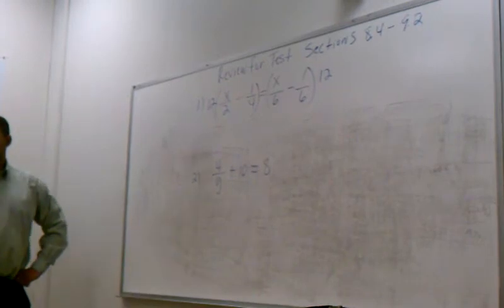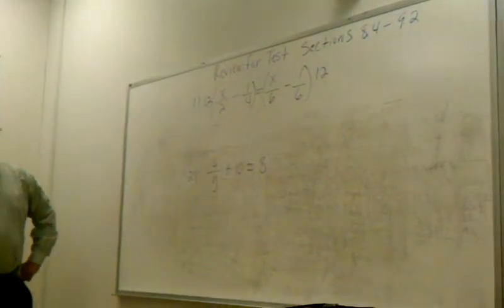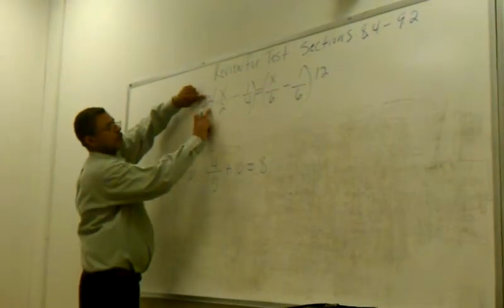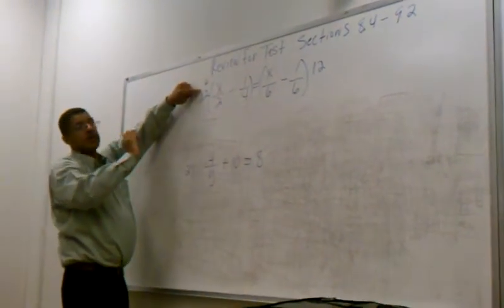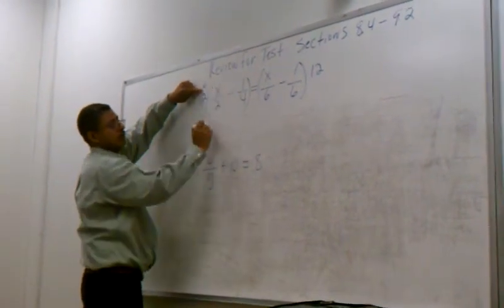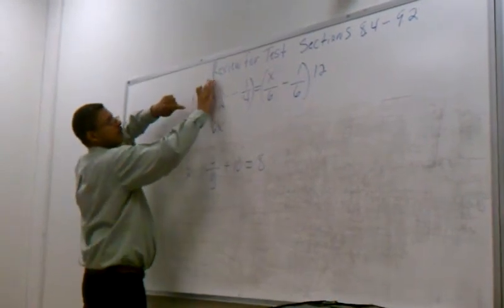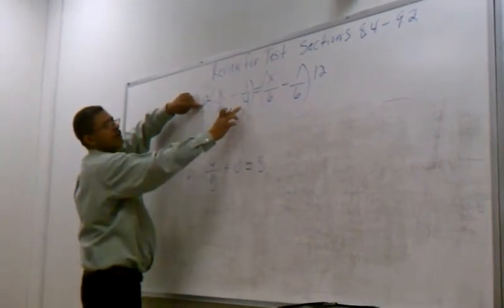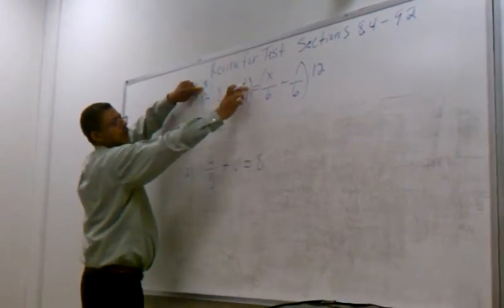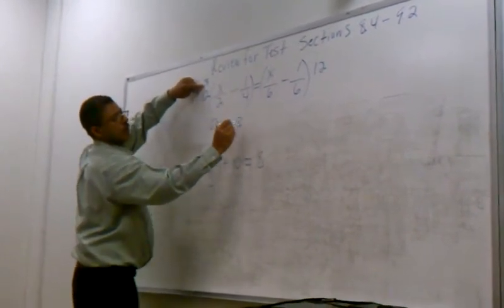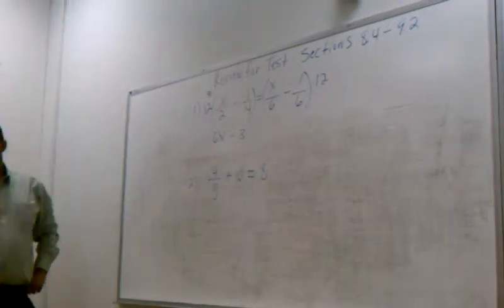Now you're going to use the distributive property. So how many times does two go into twelve? Six times. And what's six times X? Six X. Now let's go to the next one. How many times does four go into twelve? Three. And what's three times one? Three. So negative three, right? Everybody got that?